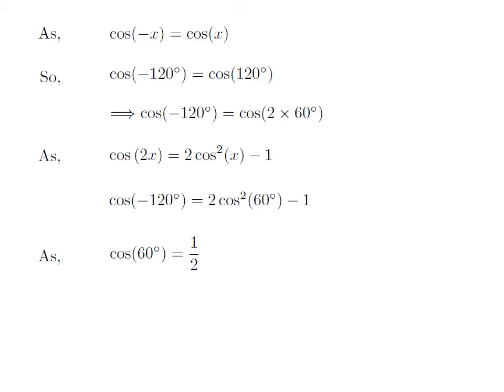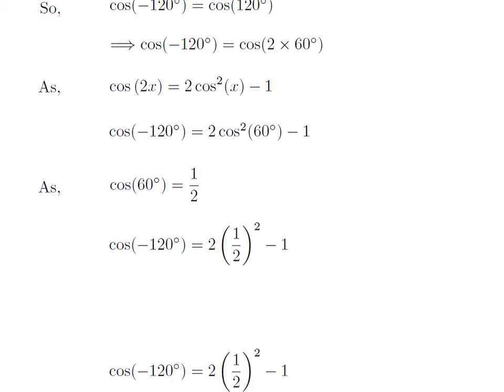We know the value of cosine of 60 degree is equal to 1/2. So, plugging the value of cosine of 60 degree in the expression for cosine of minus 120 degree, we get cosine of minus 120 degree is equal to 2 into square of half minus 1.